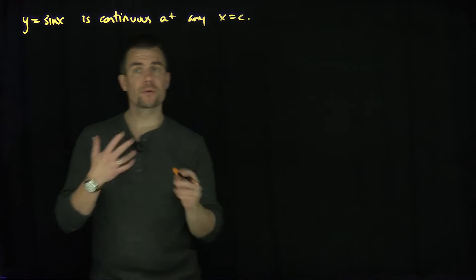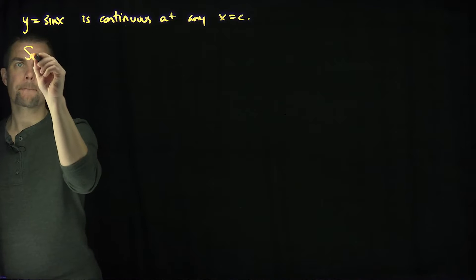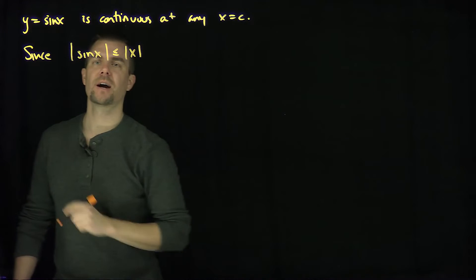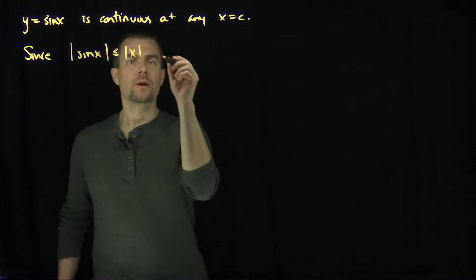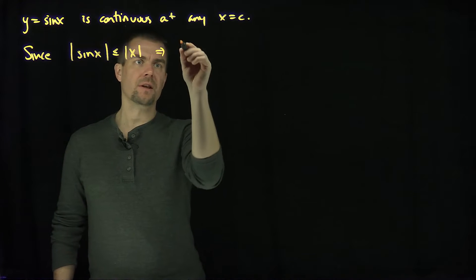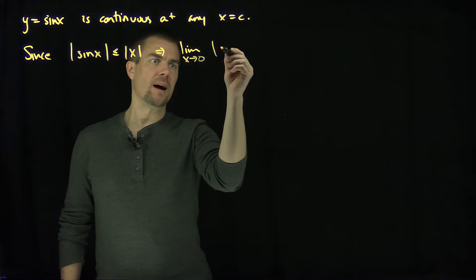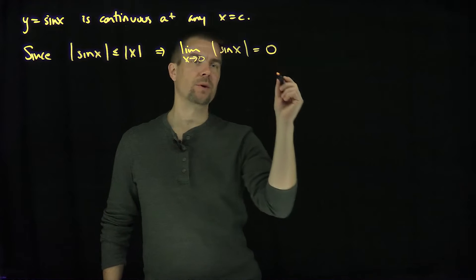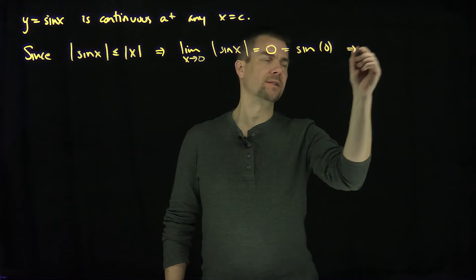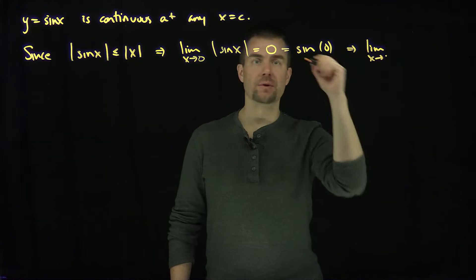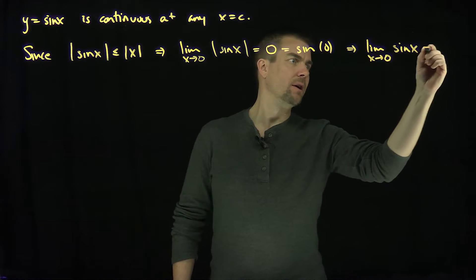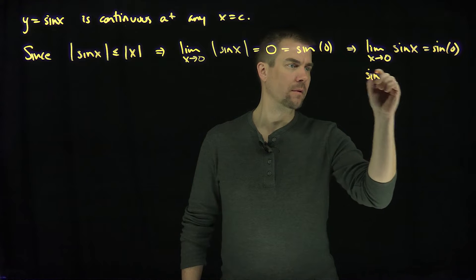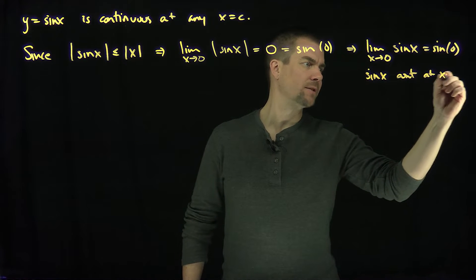To prove this, we're going to first prove that it's continuous at zero. Since the absolute value of sine of x is less than or equal to the absolute value of x — and that statement is true for all values of x — we can say that the limit as x goes to zero of the absolute value of sine of x is stuck between negative x and x, which equals zero by the squeeze theorem, and that's of course equal to sine of zero. So the limit as x goes to zero of sine of x equals sine of zero, which shows that sine is continuous at x equals zero.